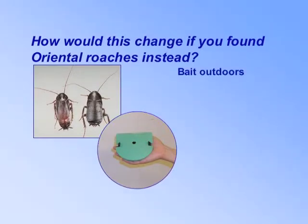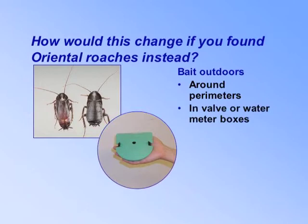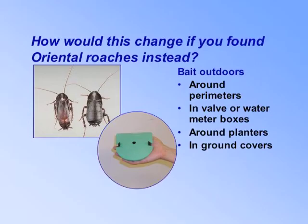Oriental cockroaches are an outdoor species, so focus management efforts outdoors. Place baits outdoors around perimeters, in valve boxes or water meter boxes, around planters, and in ground covers.